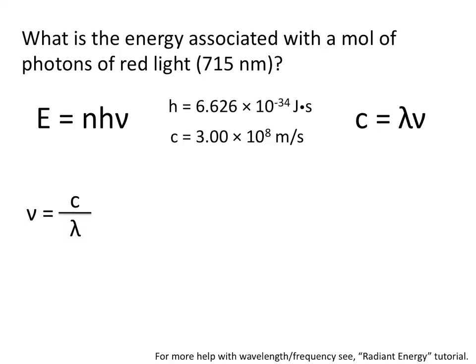The frequency is equal to the speed of light divided by the wavelength, which is 3 times 10 to the eighth meters per second divided by 715 nanometers. Now, you should realize that meters and nanometers don't cancel each other out, so we need to use a conversion factor. There are 10 to the ninth nanometers for every one meter.